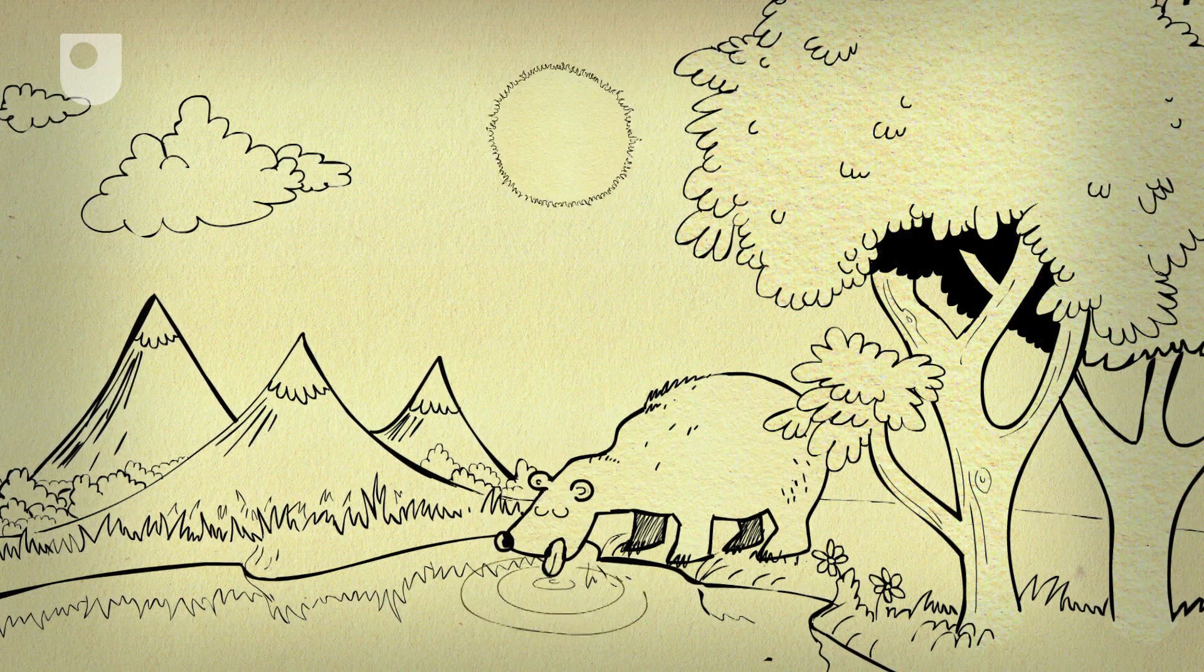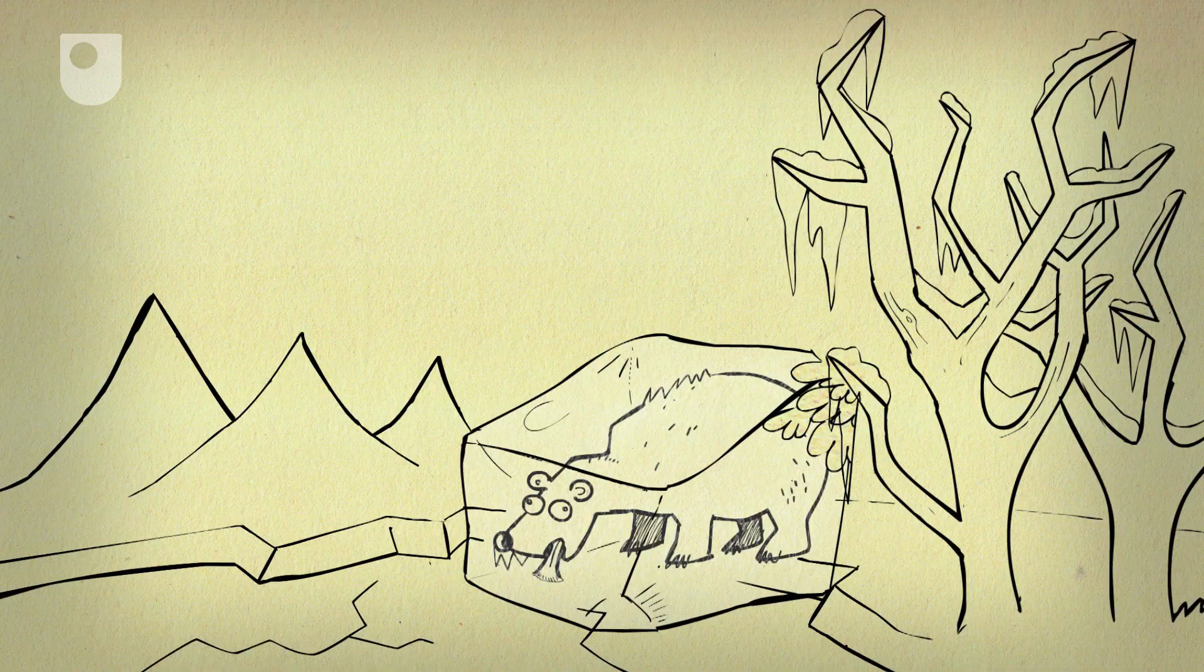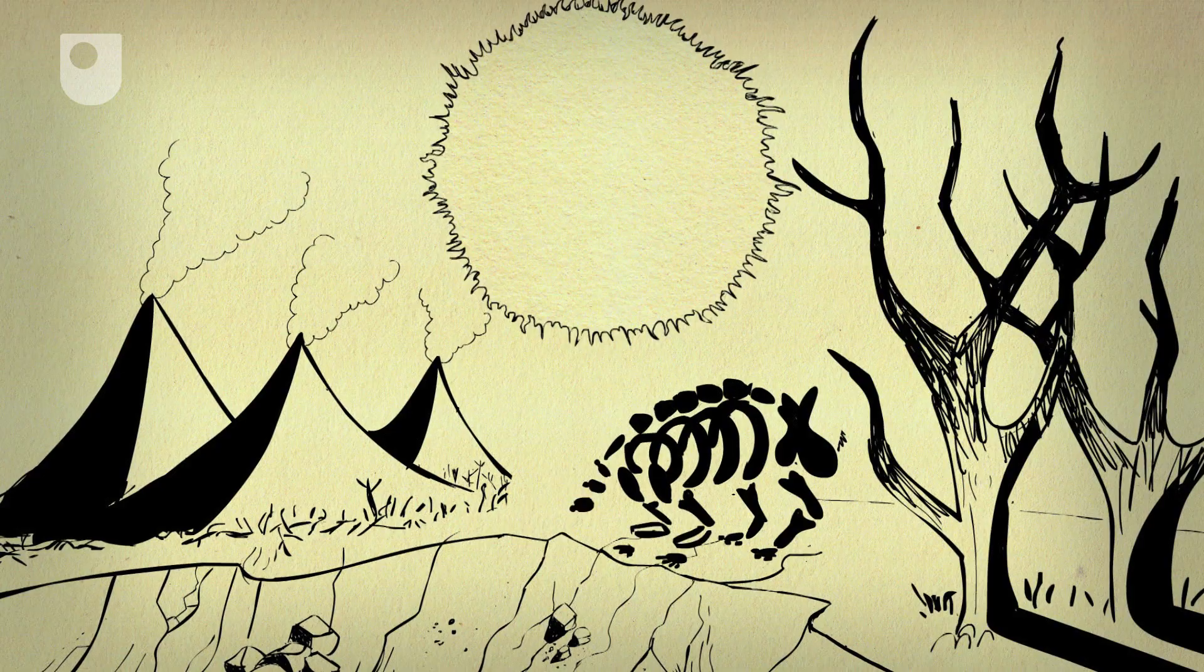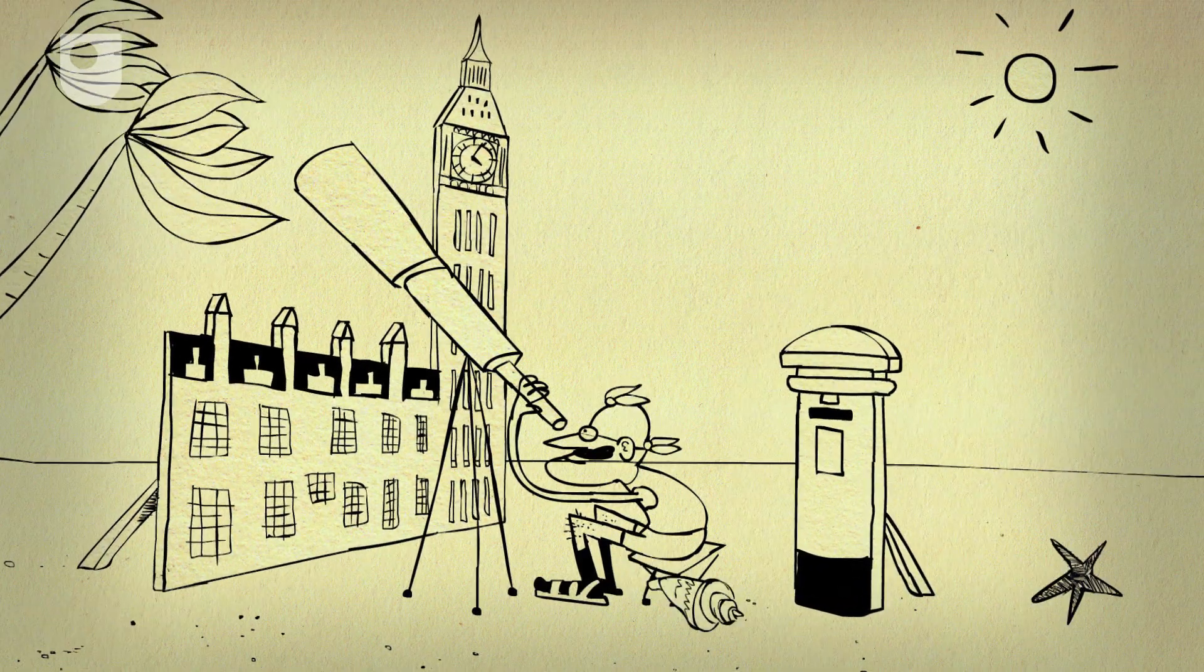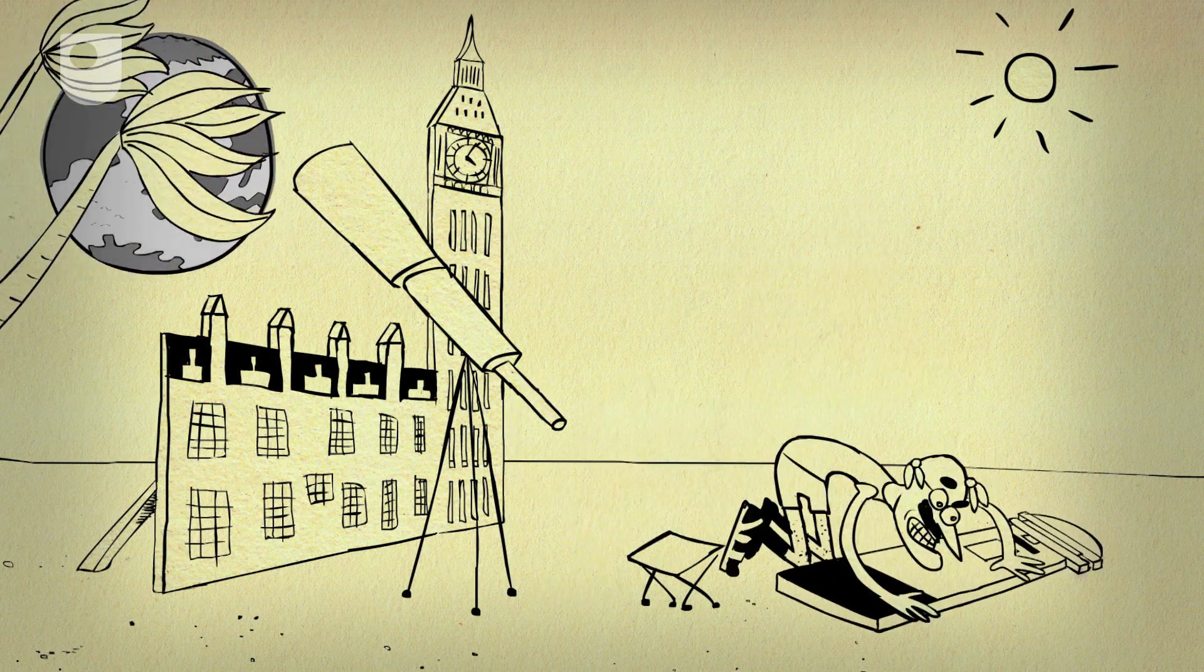Any further away they'd be too cold, any closer too hot. And although hundreds of exoplanets have been discovered, astronomers haven't yet found one that's just like the Earth.